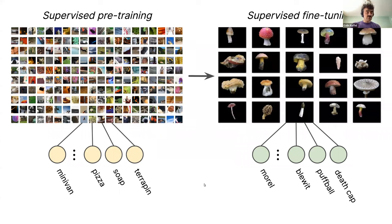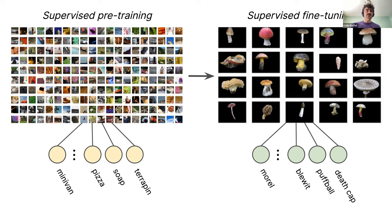Let's talk a bit about transfer learning. Transfer learning has become a hugely impactful paradigm in machine learning recently. When we say transfer learning, we mean that rather than taking a model and directly training it on the task that we care about, we're going to first train it on some other task and then fine tune it on the downstream task. Doing this first step of training on a different task often makes it converge faster to a better solution with less labeled data.